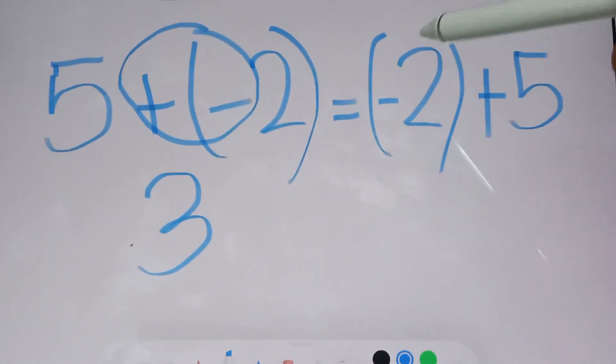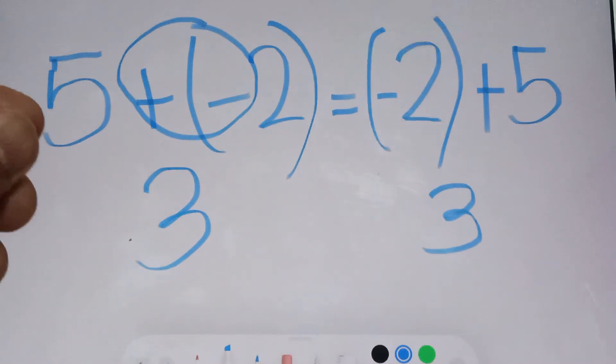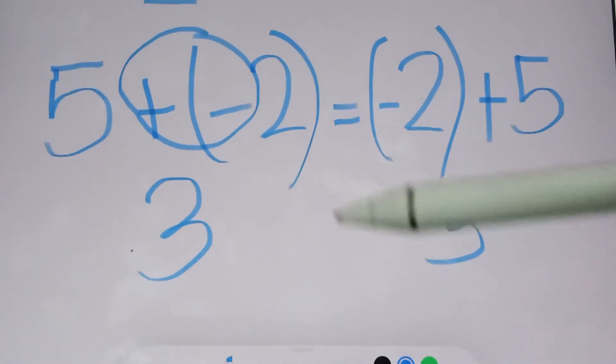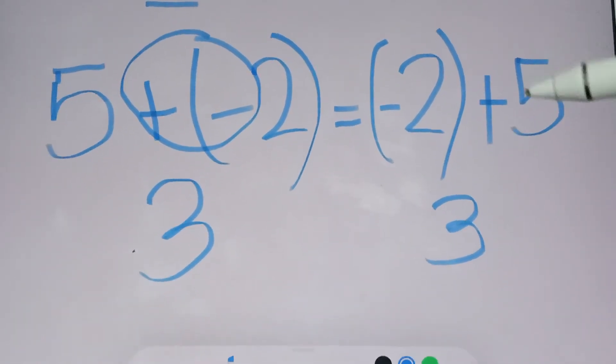But in here, it will become minus 2 plus 5. So, it will give you positive 3. Whatever your way on how to solve this problem using the commutative property, the answer is always the same.